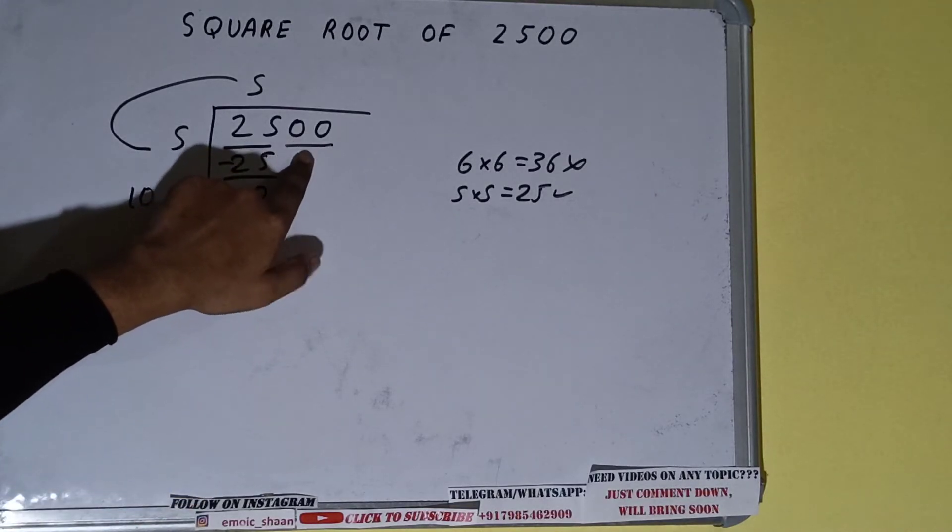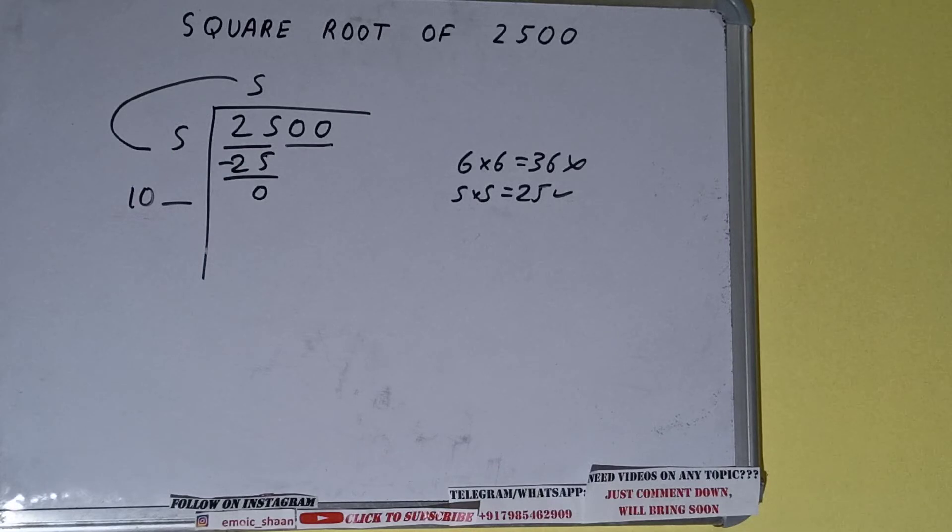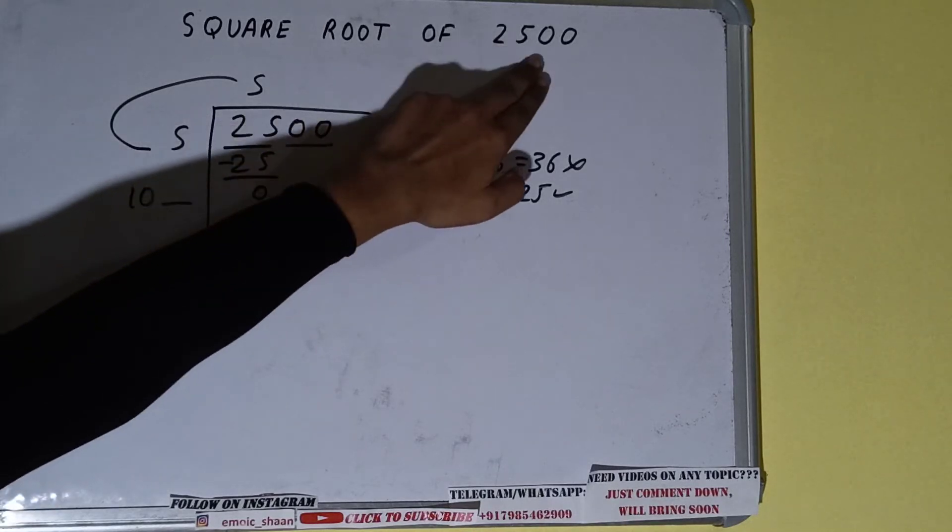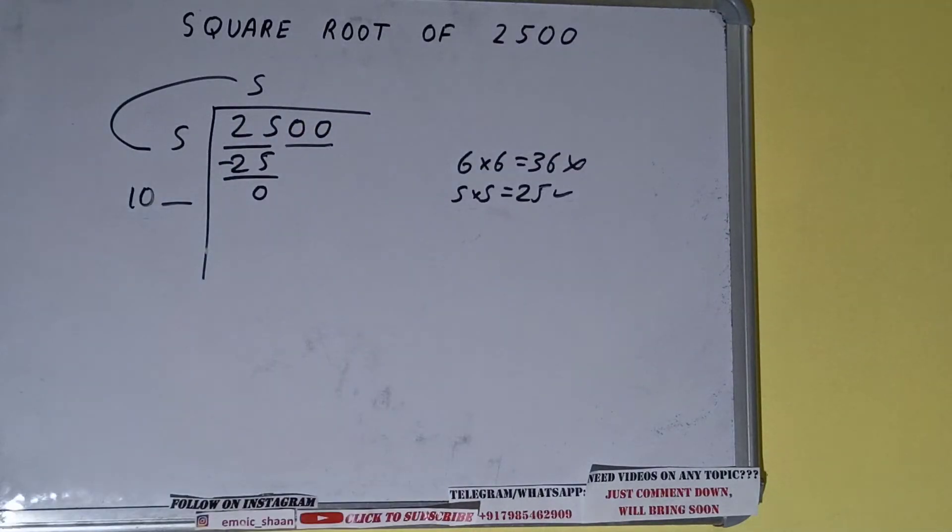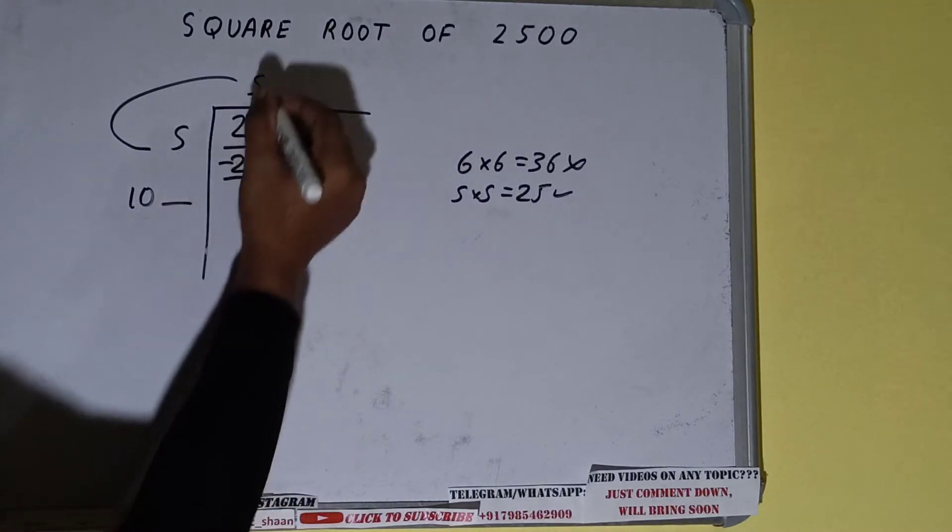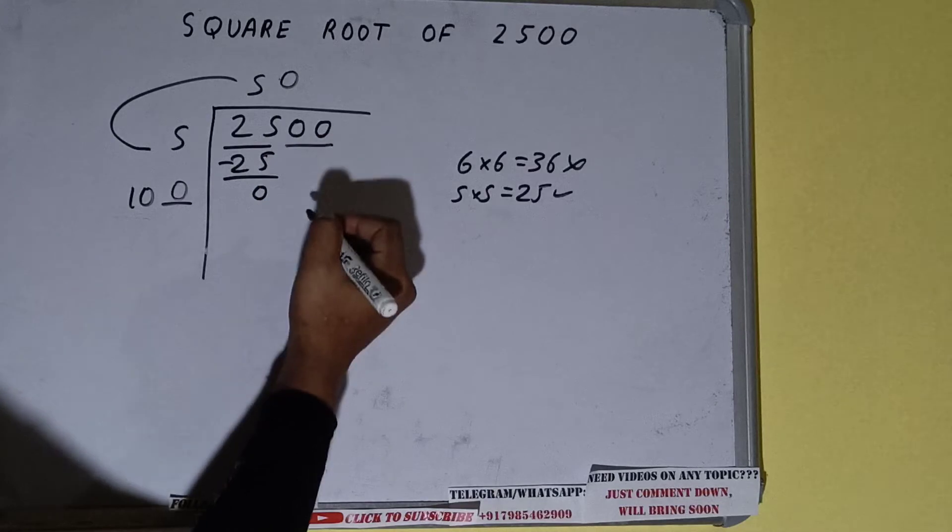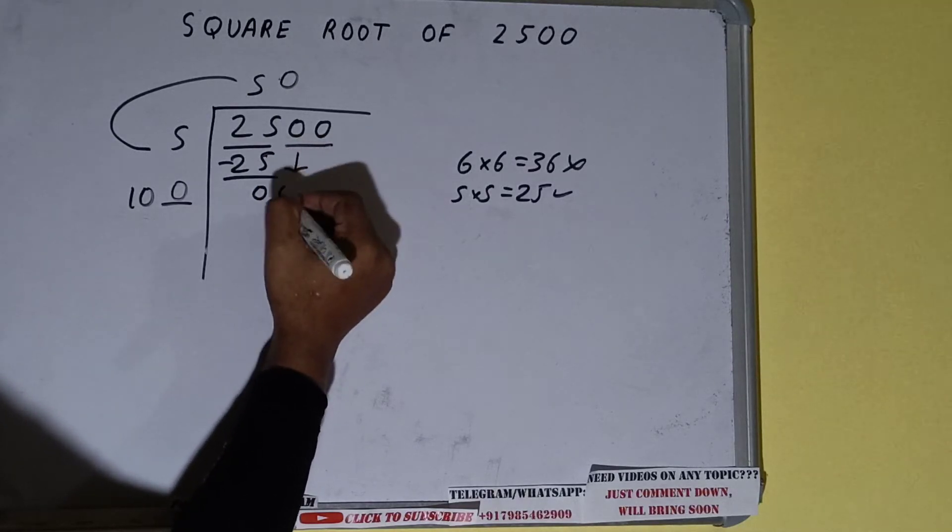So we have to divide it once. Okay, so whatever number we write here we have to write here also. So if we write zero here and zero here, first we need to bring this down. Okay, if we write zero here and zero here, we'll place zero.